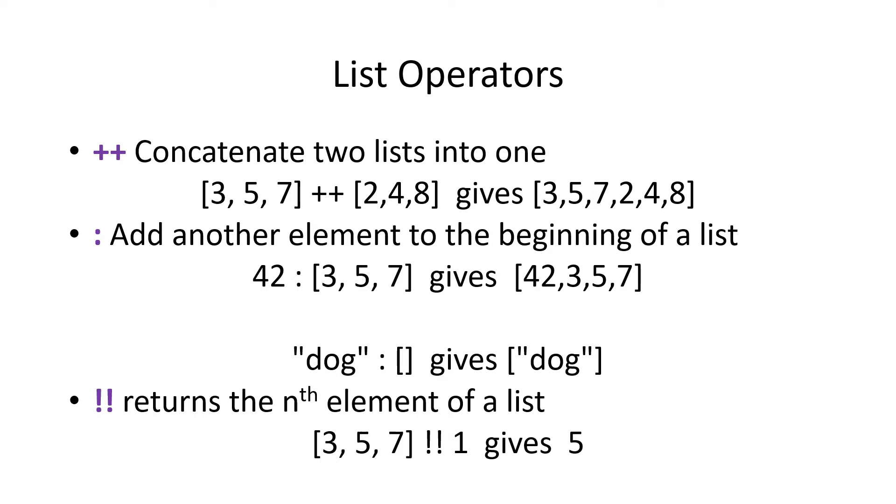You could add an element to the beginning of a list. Here we show 42 colon, then a list, and that makes 42 the first element in a new list. If you add an element to a null list, it makes a one element list.